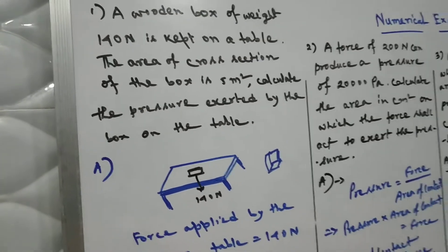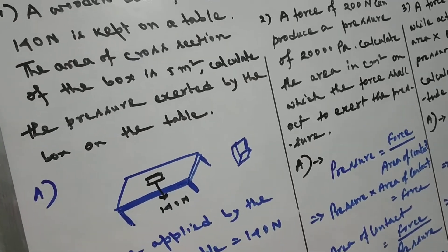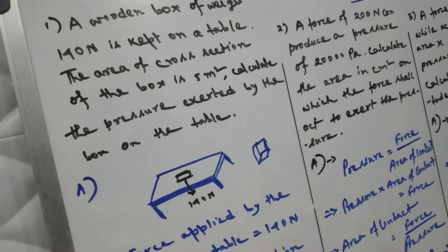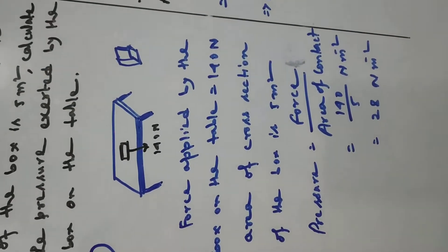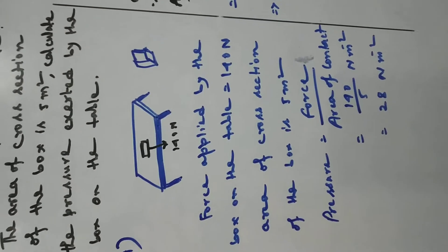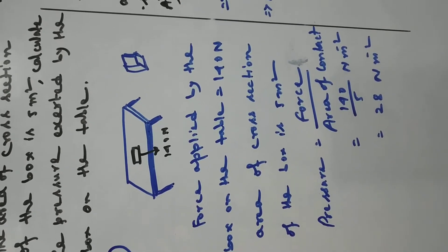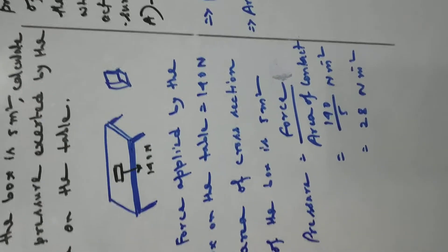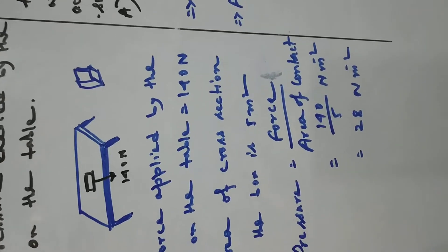The area of cross-section of the box means the area of the base of the box — that means the area of contact between the box and the table is 5 meter square. Force applied by the box on the table is 140 Newton. We know pressure is equal to force divided by area of contact, so pressure is 140 divided by 5.